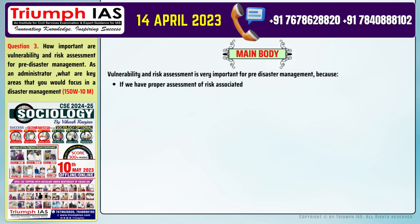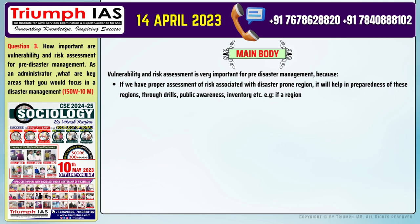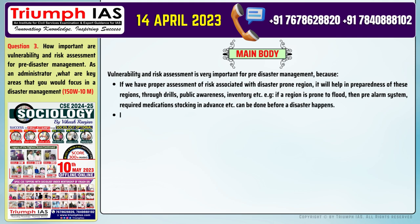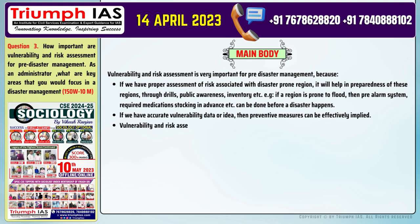If we have proper assessment of risk associated with a disaster-prone region, it will help in preparedness of these regions through drills, public awareness, and inventory. For example, if a region is prone to flood, then pre-alarm systems, required medications, and stocking supplies in advance can be done before a disaster happens. If we have accurate vulnerability data, then preventive measures can be effectively implied. Vulnerability and risk assessment is also important to write policies, ordinances, or laws and effective Disaster Risk Management planning for proper mitigation.